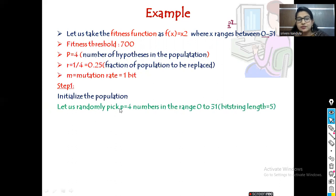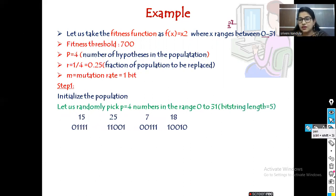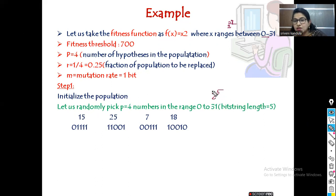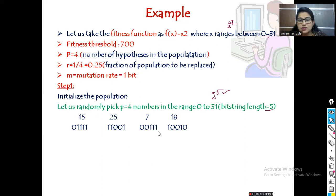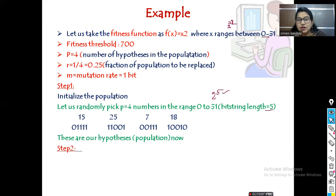For the first step — initializing the population — we take p = 4 numbers in the range 0 to 31. To represent 31 we need 5 bits, since 2⁵ = 32. We use a bit string length of 5. The population selected is {15, 25, 7, 18}, and you can see their 5-bit binary string representations. These are our four hypotheses included in the population.